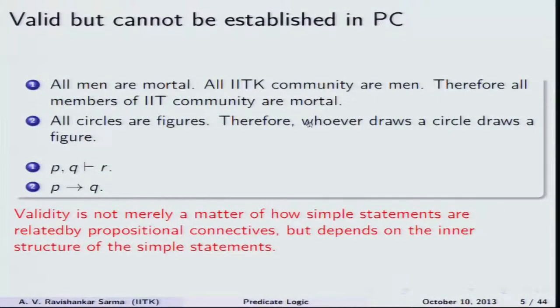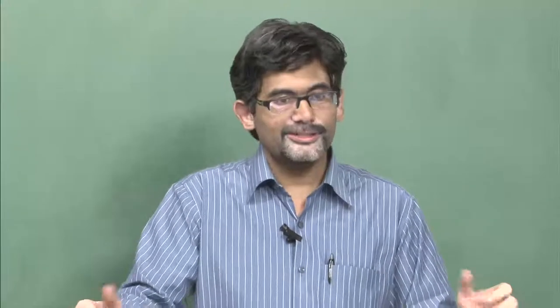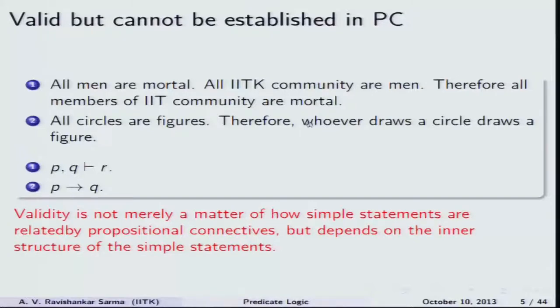Now let us consider a simple example and see why propositional logic fails to explain certain kinds of arguments. We should note that when we introduced Aristotelian logic, it is also considered to be a kind of predicate logic, but it has its own limitations. Not all sentences can be put in the form of the four categorical propositions. Aristotelian or traditional logic has limitations: it talks about terms representing groups rather than individual terms — individual beings or things.